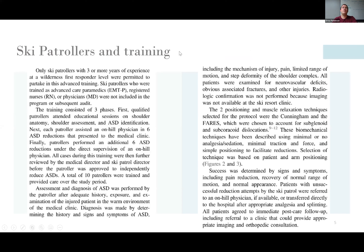How they went about this: they recruited ski patrollers who did not have formal medical training — experienced ski patrollers with three or more years of experience. They were first sent through an anatomy course to become familiar with shoulder anatomy before even thinking about reductions. They were then sent out with a provider to do shoulder reductions assistively or observationally, and then supervised in performing reductions — all during the training aspect before being cut loose to do this independently.